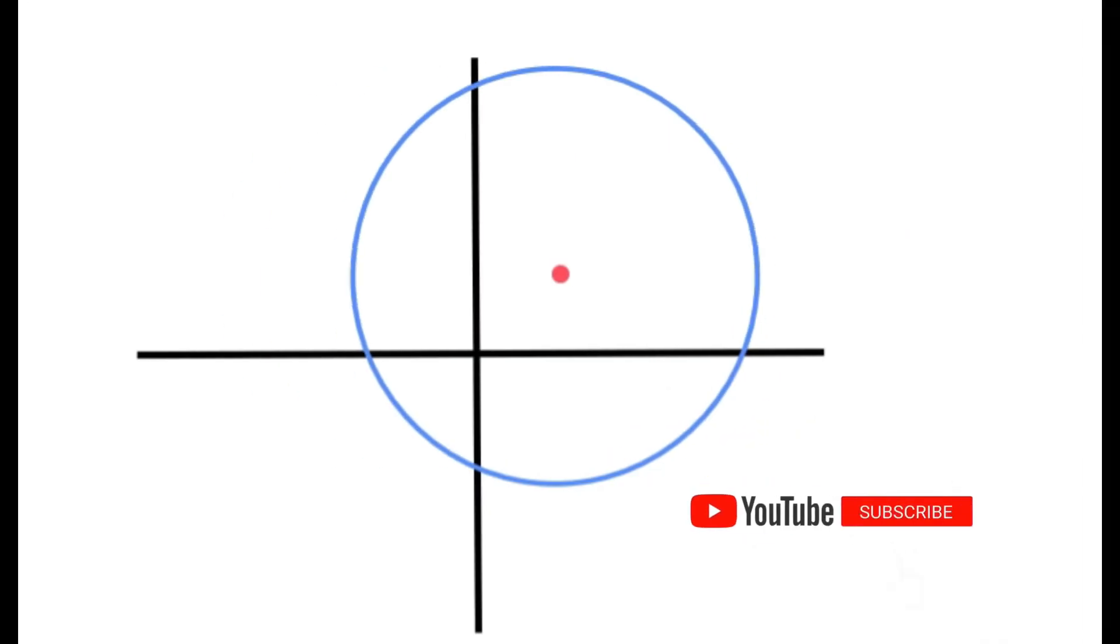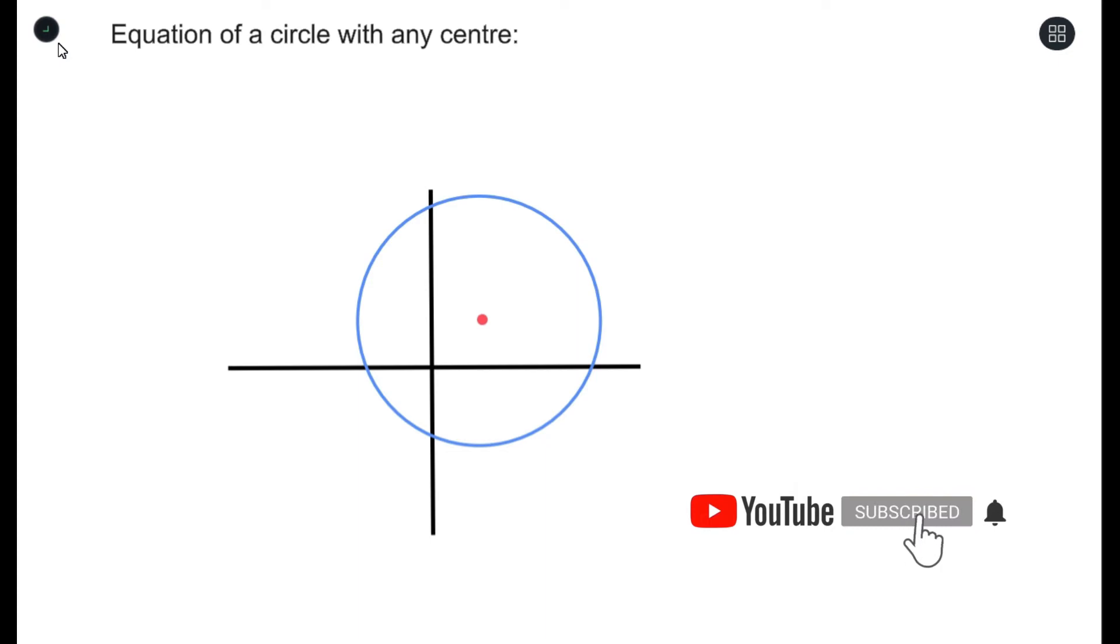Equation of a circle with any center. In the last video we talked about equation of the circle where the center had to be the origin. Now for this one, the center doesn't have to be the origin. It could be any part of your Cartesian plane.